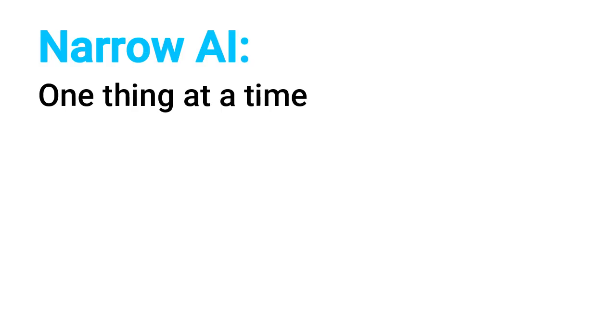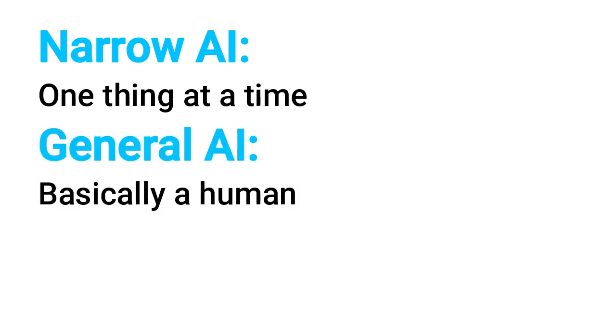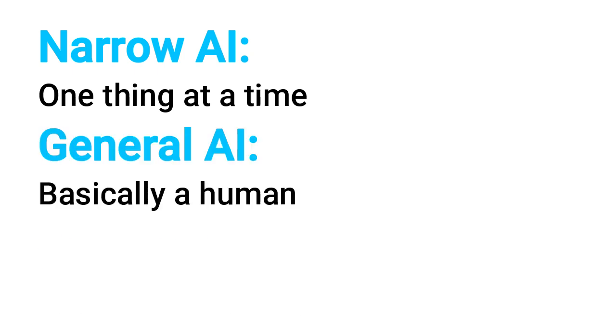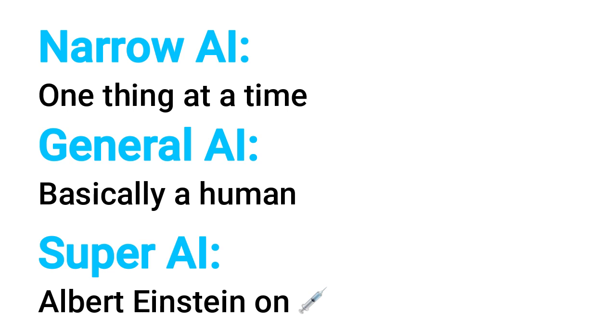So to recap: narrow AI is really good at doing one thing very well, general AI can do just about anything a human can, and super AI would be something like having the ultimate genius — but we're not quite there yet. As a non-technical person, that's everything you need to know about AI and how it's trained.